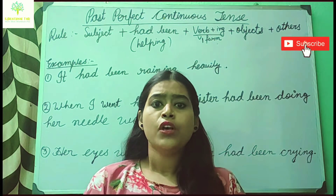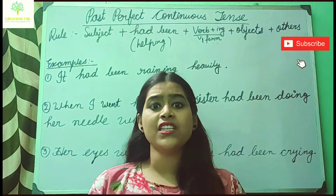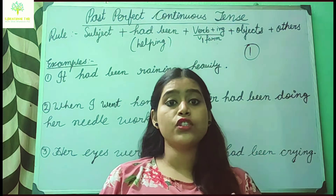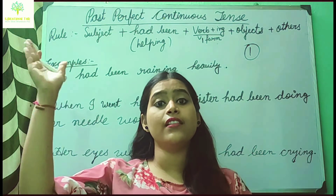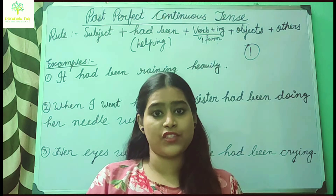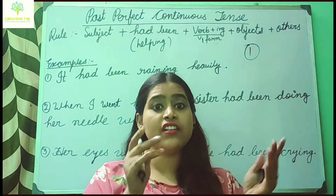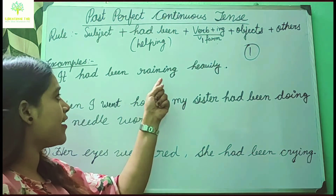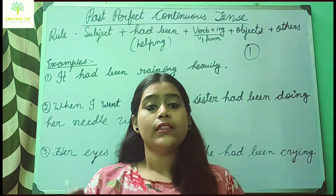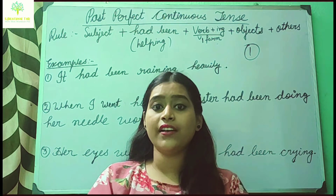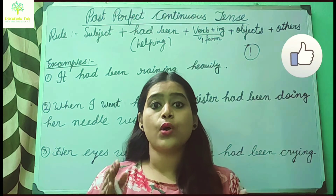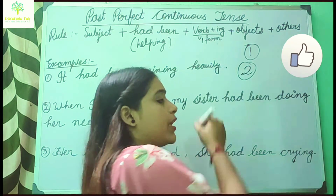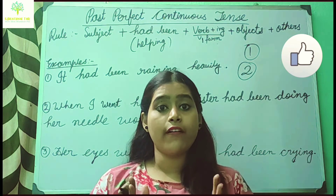First, when do we use past perfect continuous tense? It is used for an action which started in the past and continued up till a point in the past. For example, 'It had been raining heavily.' This action started in the past and continued up in the past, so it is past perfect continuous tense.